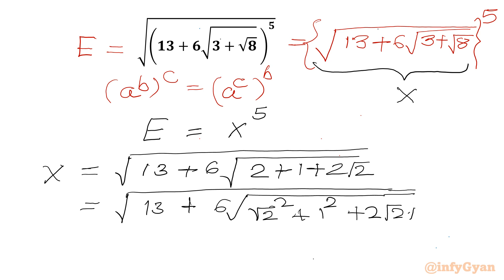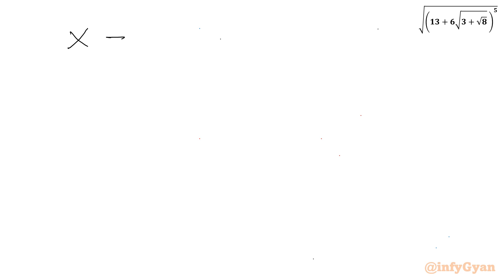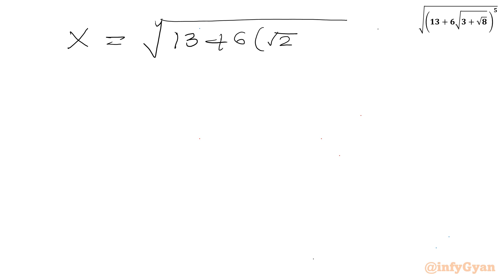Using the algebraic identity a² + b² + 2ab = (a+b)², we can write this as the square root of (root 2 + 1)². Now we can cancel the square root and the power 2, leaving us with root 2 + 1. So x equals the square root of 13 plus 6 times (root 2 + 1).